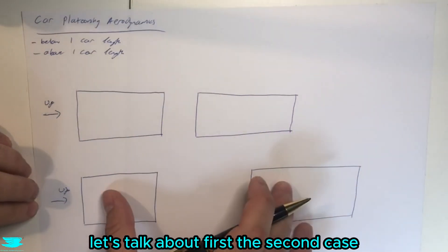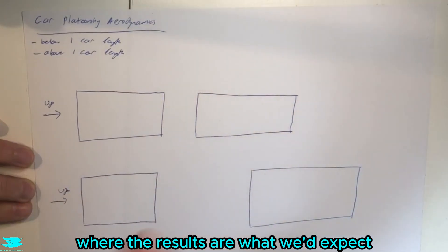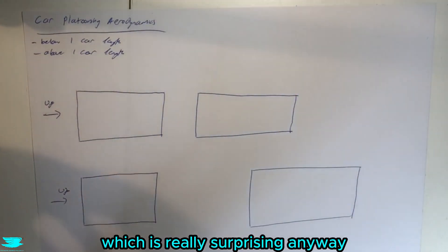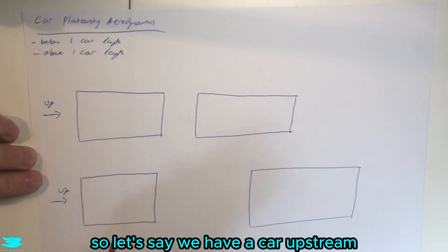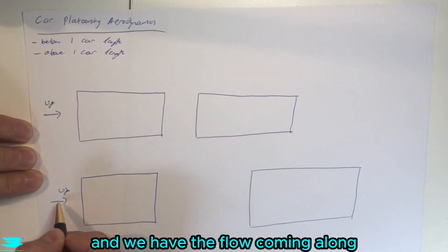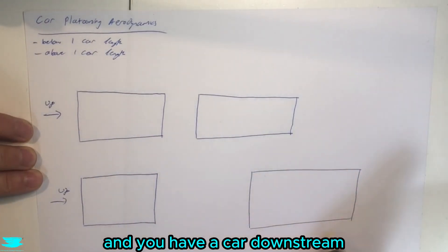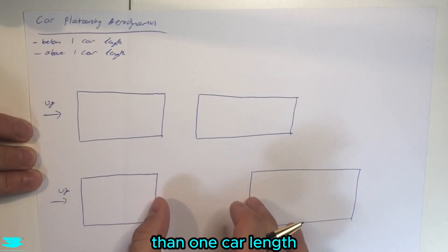So let's talk about first the second case where the results are what we'd expect, and then we go into the first case, which is really surprising. So let's say we have a car upstream, and we have the flow coming along, and then we have a car downstream, and these are separated by more than one car length.